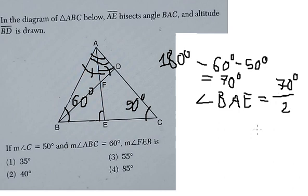And you get 35 degrees. After you get 35 degrees, we consider triangle ABE.